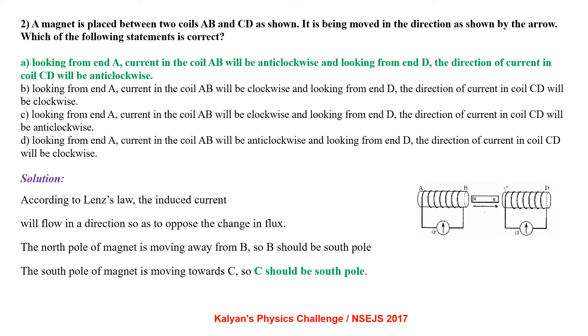Looking from end A, current in the coil AB will be clockwise and looking from end D, the direction of current in the coil CD will be anticlockwise.